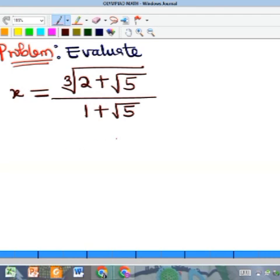What are we expected to do? You cannot rationalize this even though it's a fraction because the numerator is having a root all over everything there. You can see 2 plus root 5 under a cube root. So the best thing to do here is to cross multiply.